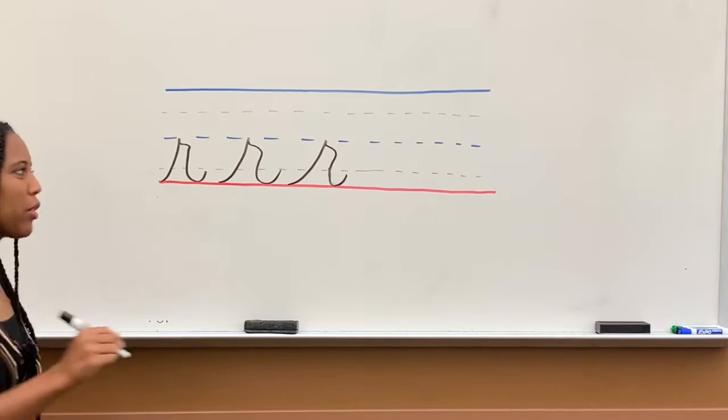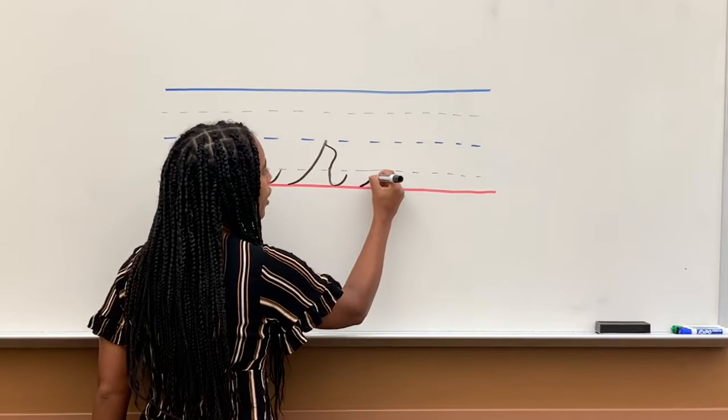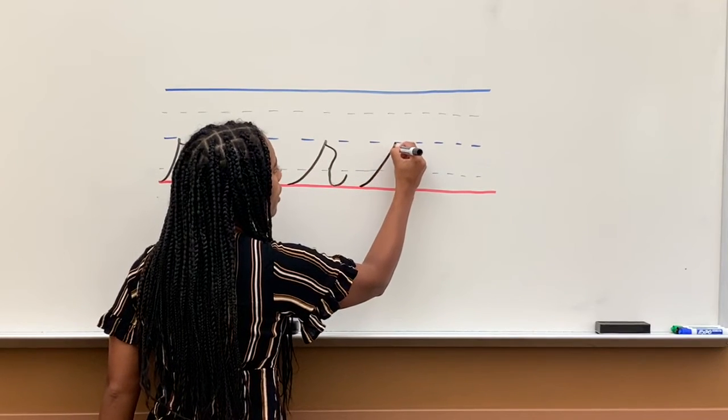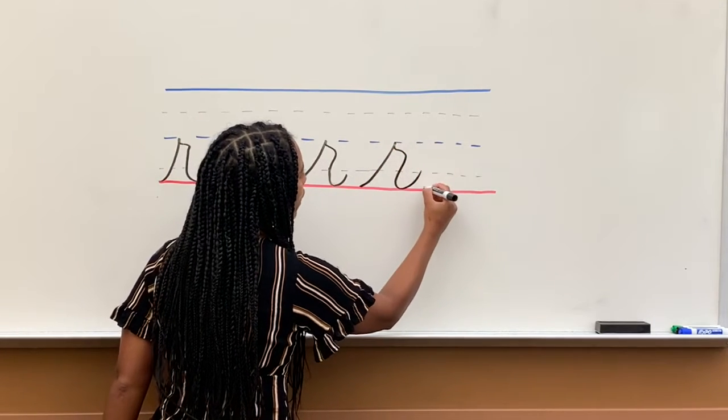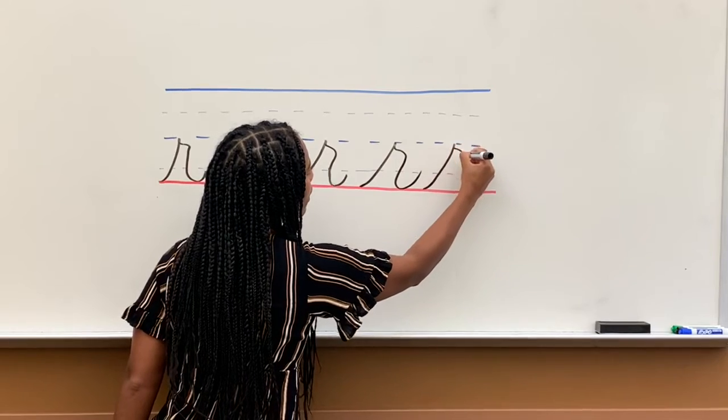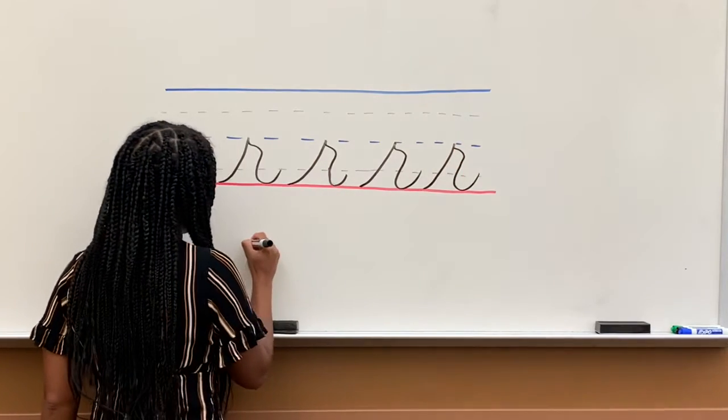And then you finish the rest of it. Again, you're going to curve up, down a little, and then curve down, kick it out. Again, curve up, down a little, kick it out. Again.